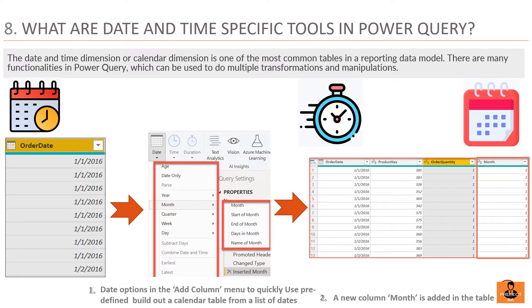Question 8: What are date and time specific tools in Power Query? The date and time dimension, or calendar dimension, is one of the most common tables in a reporting data model, and Power Query offers many functionalities for transformations and manipulations. For example, in Power Query Editor, click on Add Column and then under Date, select Month Only — a new column with the header Month will be added to the table. Similarly, if you have a date and time column like an order date of 25th October 1995 at 2 PM, you can create separate columns for date and time by applying Date Only and Time Only on the order date column.